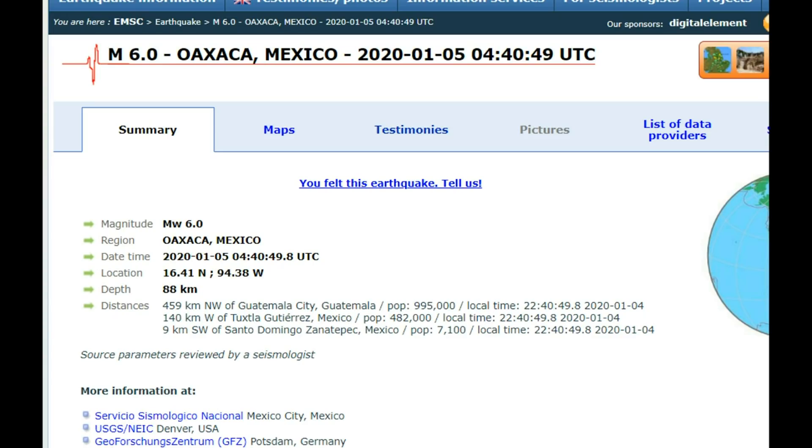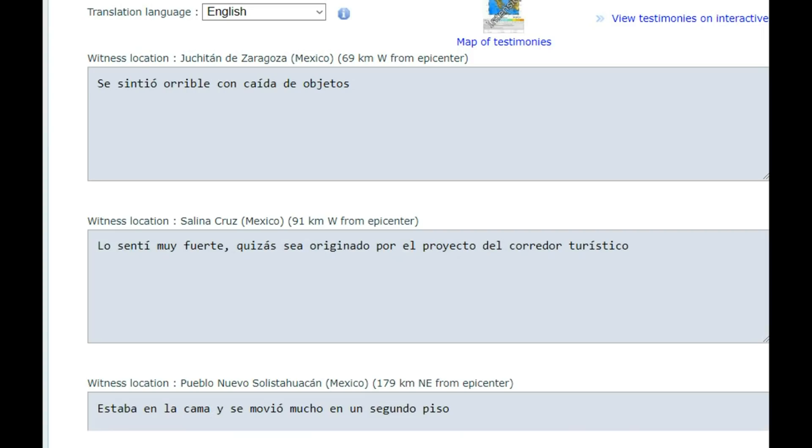USGS said it was a magnitude 5.8 testimony 69 kilometers from the center of this earthquake, which is about 42-43 miles from where the earthquake occurred, said that things, objects fell. This other one says very strong.